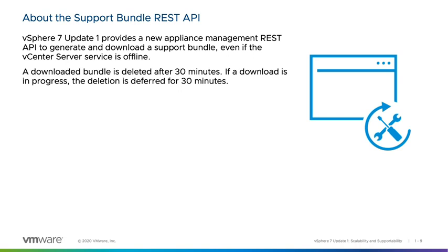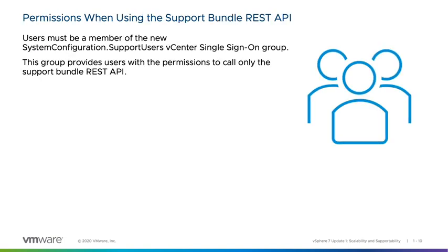To use the support bundle REST API, the Appliance Management Service is required to be running. Users must be a member of a new single sign-on group to leverage the support bundle REST API. This group is called SystemConfiguration.SupportUsers, and it provides users with the permissions only to call the support bundle REST API — it does not provide any other privileges to the environment. By default, the SSO administrator role is a member of this group.